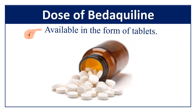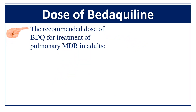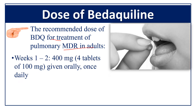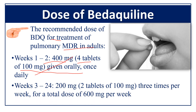Bedaquiline is available in tablet form. The recommended dose for MDR-TB treatment in adults is as follows: for weeks 1 and 2, 400 mg is taken as four tablets of 100 mg each, given orally once daily. From weeks 3 to 24, 200 mg is taken as two tablets of 100 mg, three times per week, for a total of 600 mg per week.